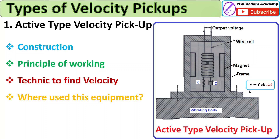Here, similar to the seismic instrument, there is a spring with stiffness k and a dashpot attached inside the body, with liquid filled inside. You can see the picture of the actual active type velocity pickup meter, which is similar to a seismometer in construction with slight modifications.